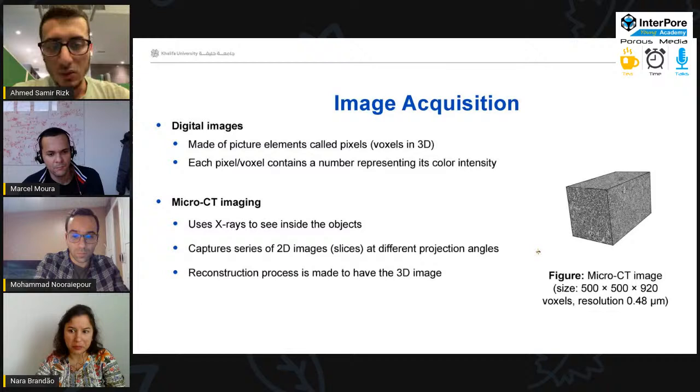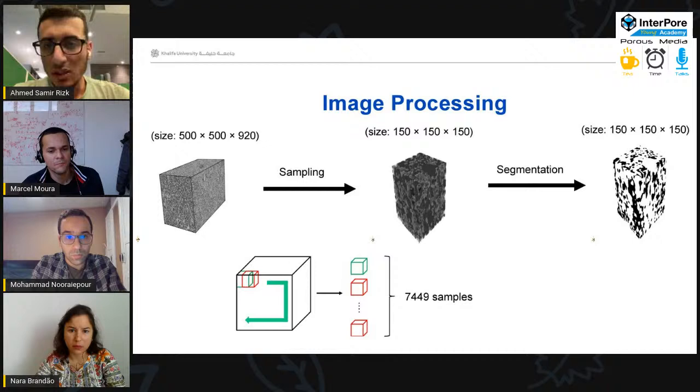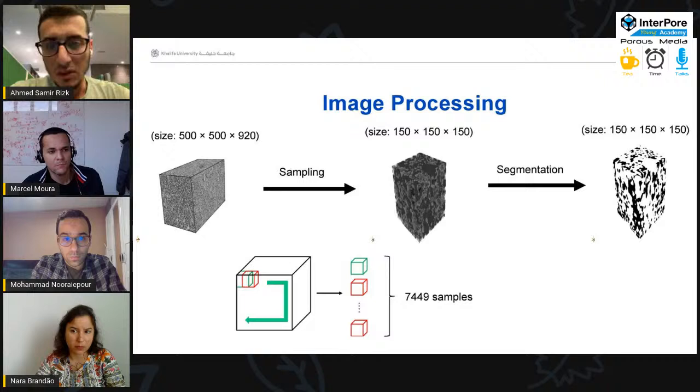And the size of this image is 500 by 500 by 920. Now to obtain a large number of samples that is required to train the machine learning model. We use the same technique as Haiyang described, like we take a cube, and this cube goes through this image and extract different heterogeneities of the sample. This cube has a size of 150 by 150 by 150. After this, we have a huge number of samples, like 7,449 samples. These samples then are processed through segmentation to differentiate between the pore and the grain.